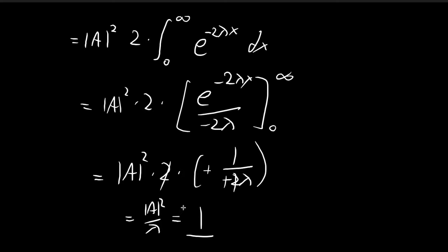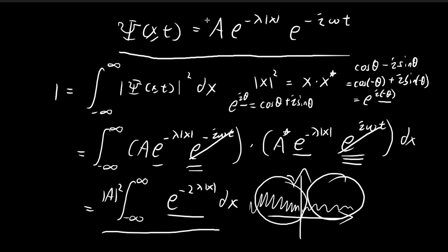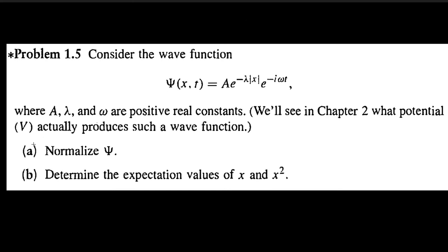This is the normalization condition, which implies |A|² = λ. We can choose A to be the simplest form — entirely real with no imaginary component. While A could in principle be complex, we choose the simplest case where A = √λ. With this choice for A we have normalized the wave function. That's how you do part a.